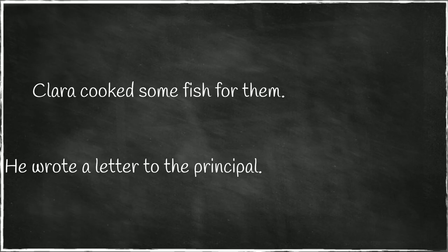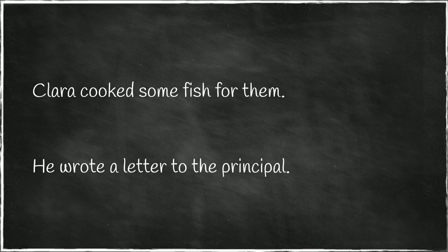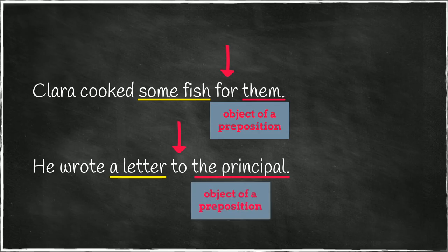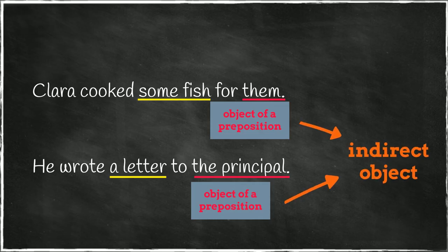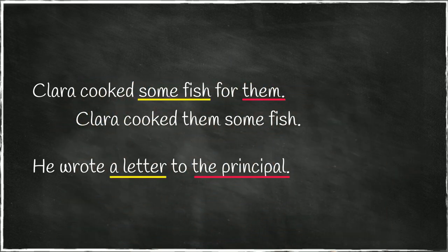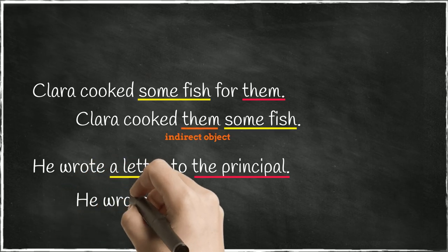Here are a couple more examples. Clara cooked some fish for them. He wrote a letter to the principal. If we wanted, we could rewrite each sentence in such a way that turns the object of a preposition into an indirect object: Clara cooked them some fish. He wrote the principal a letter.